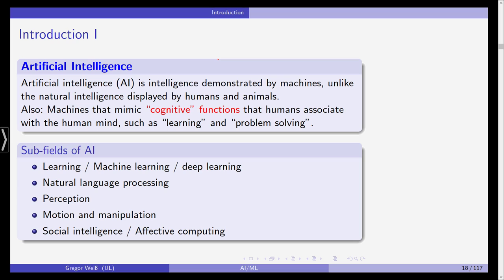I first want to give you a first idea of what Artificial Intelligence is, how you can define it, and what problems we are confronted with when using AI and ML in Finance. What is Artificial Intelligence? It's best to define it as something different than human or natural intelligence. Natural intelligence is the intelligent behavior as displayed by humans and animals, and Artificial Intelligence, or just AI, in contrast, is intelligence demonstrated by machines — a computer, a robot, etc.